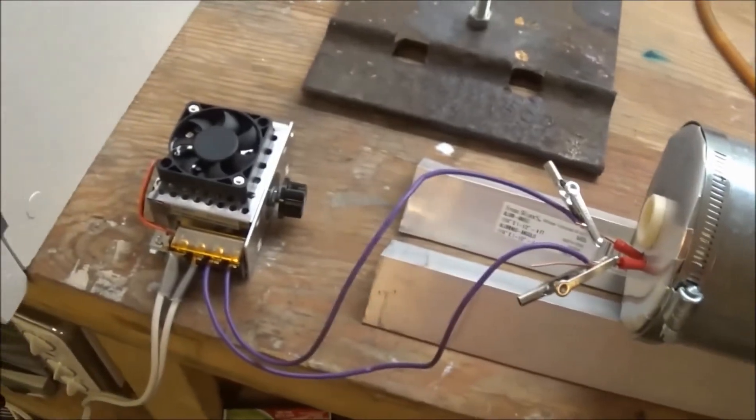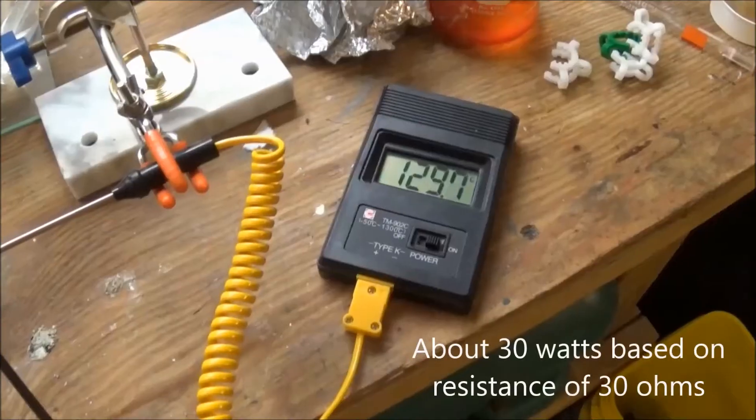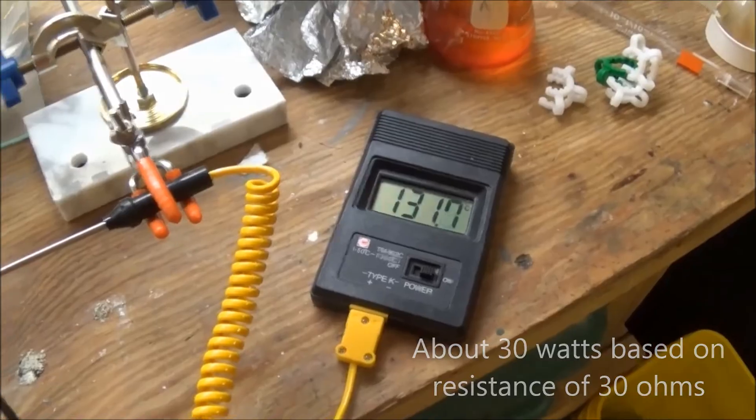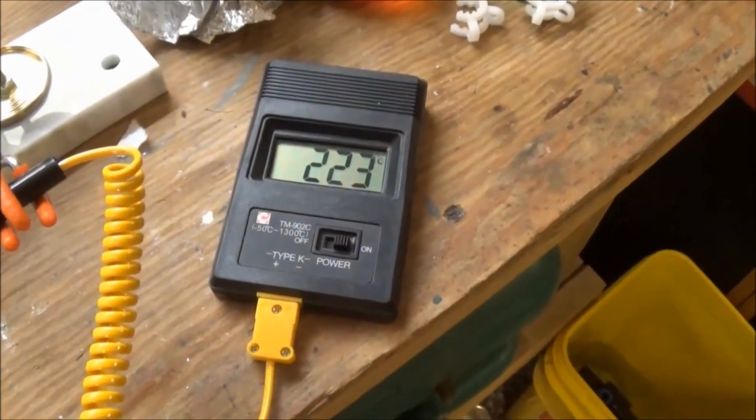For the initial run, I kept the voltage low at around 30 volts. This is so I don't stress anything and allow any water that's still in the mortar to be driven off.